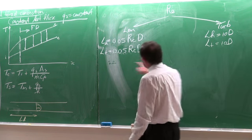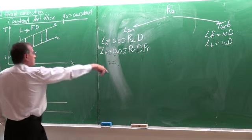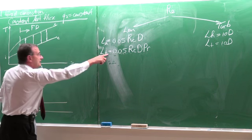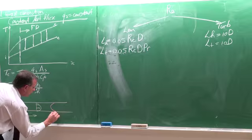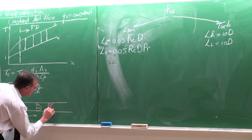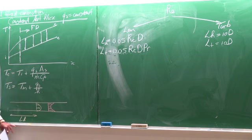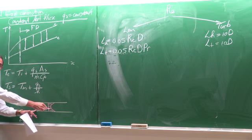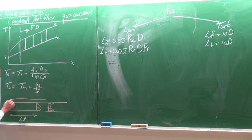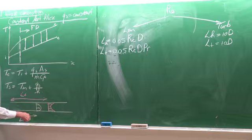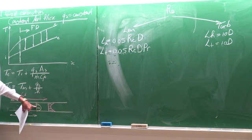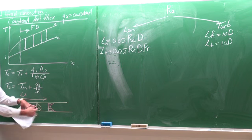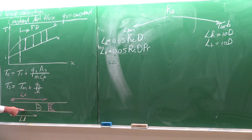LH is the hydrodynamic development length for the velocity profile, and LT is for the temperature profile. LT will be larger than LH if the Prandtl number is greater than 1. If the Prandtl number is smaller than 1, then LT is shorter. If the Prandtl number equals 1, both lengths are at the same position.